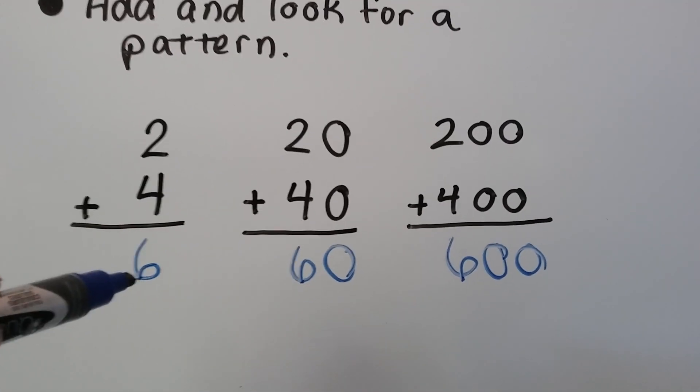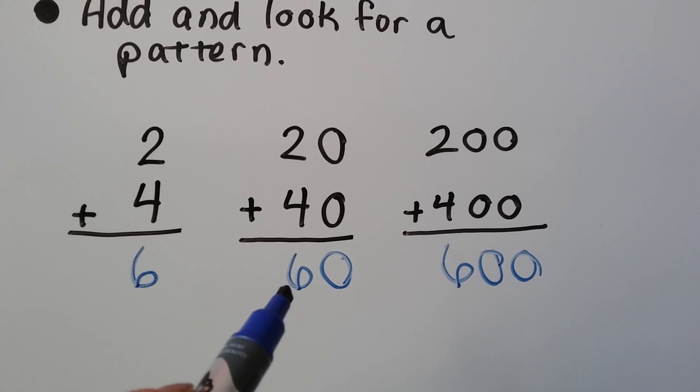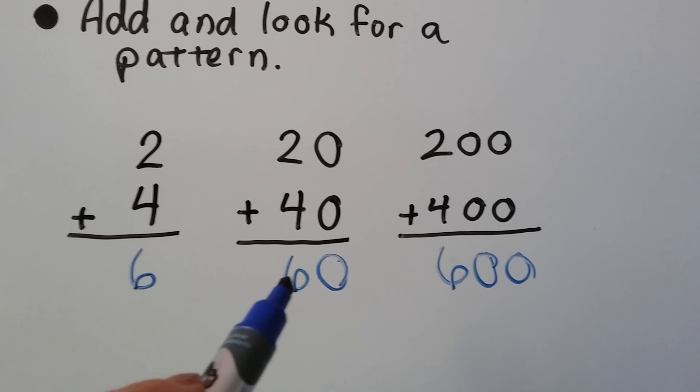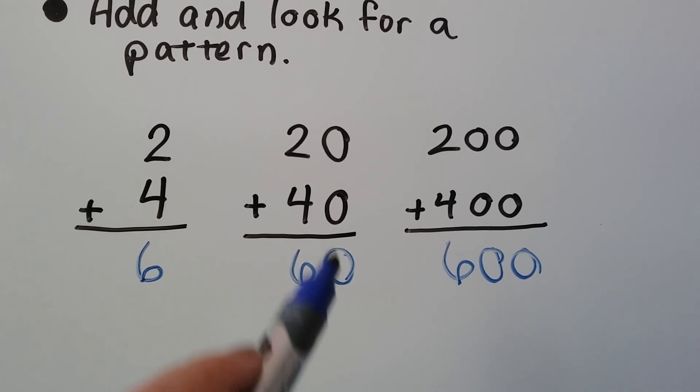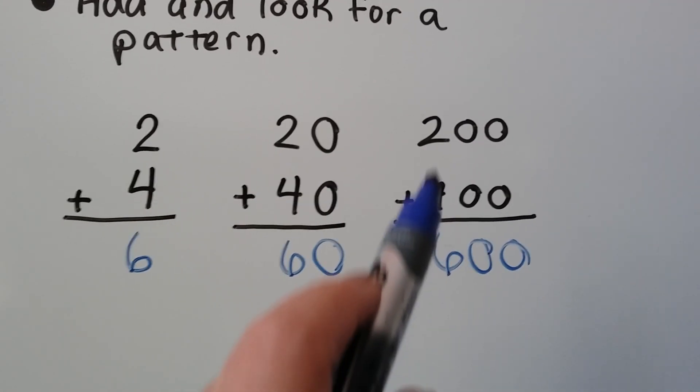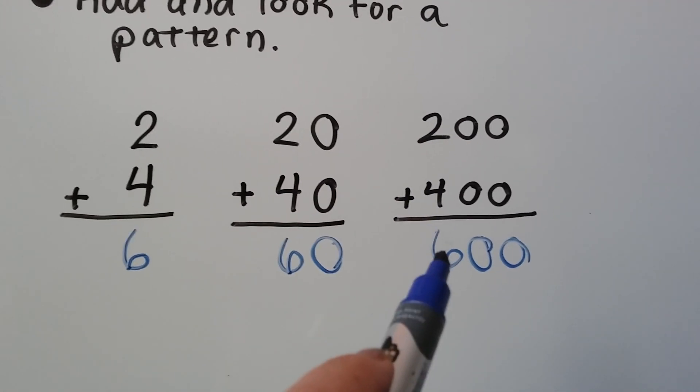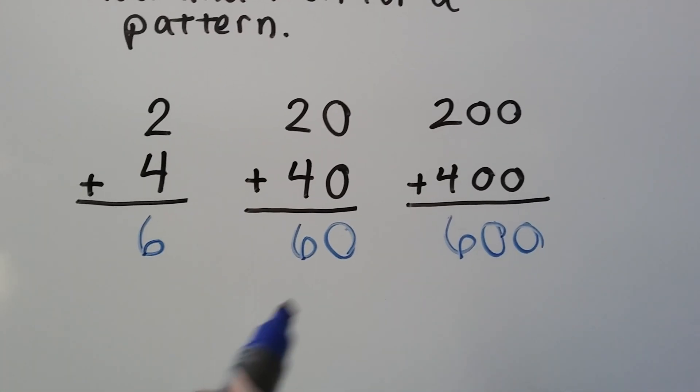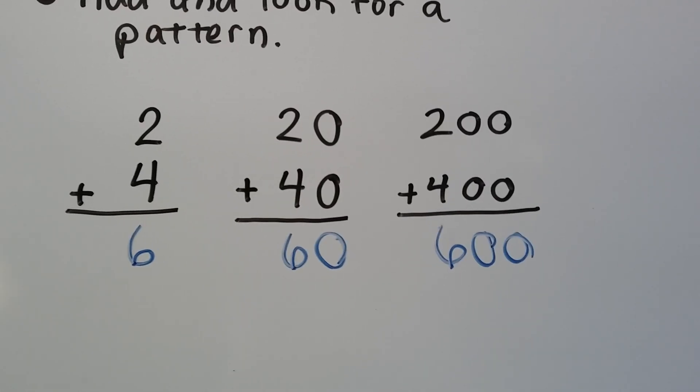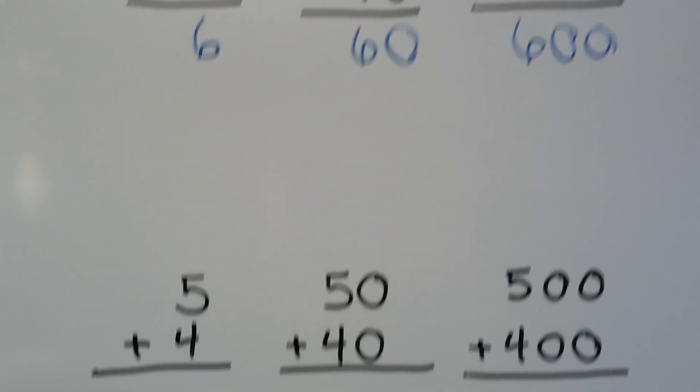When we added one digit, we just added the 6. When we added tens and no ones, we added and got a 6 and added the zero ones. Now that we add the hundreds, we add the 6 to get the 6, and now we add two zeros. No zeros, one zero, two zeros. See if we can do that again.